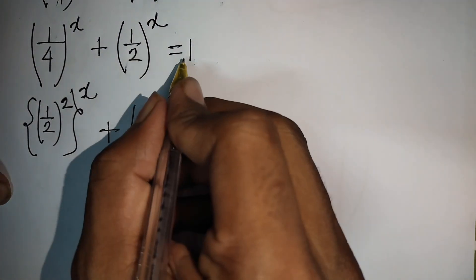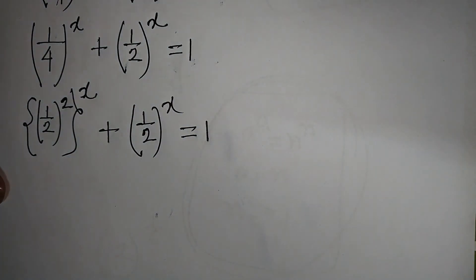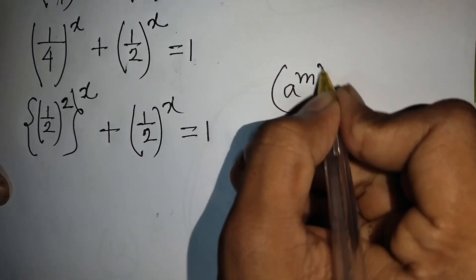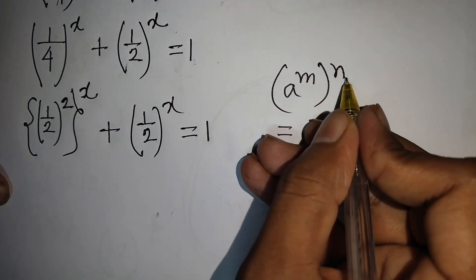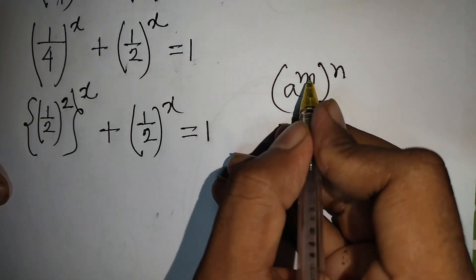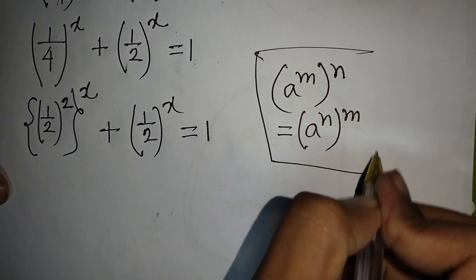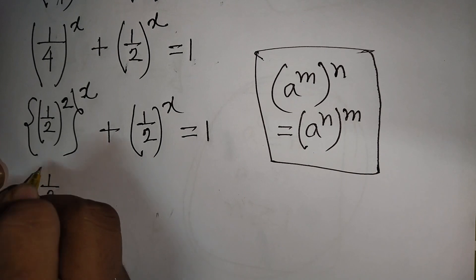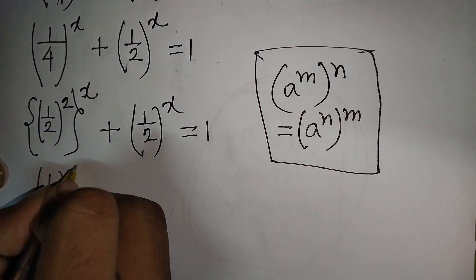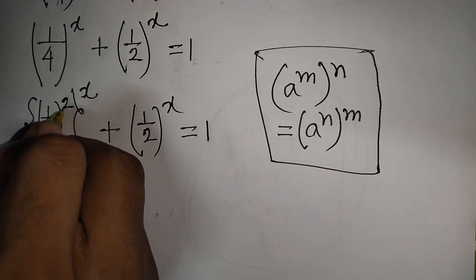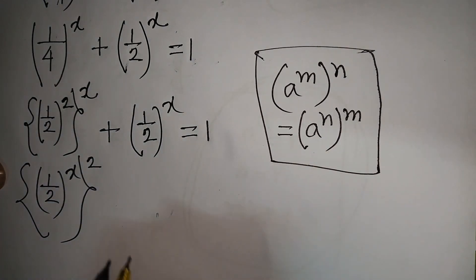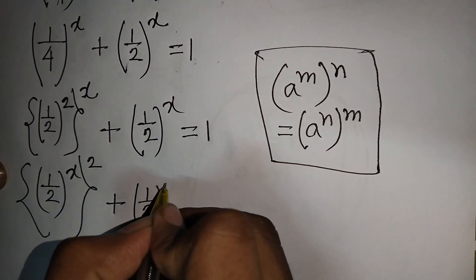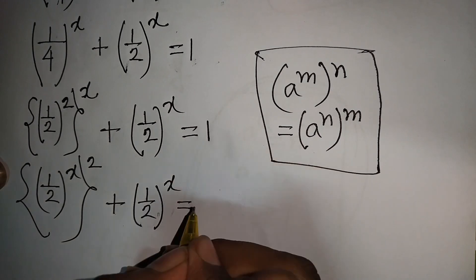Applying the exponential rule that (a to the power m) to the power n equals a to the power mn, we get (1/2) to the power x, the whole thing to the power 2, plus (1/2) to the power x is equal to 1.